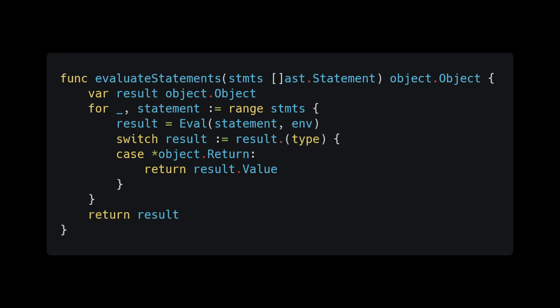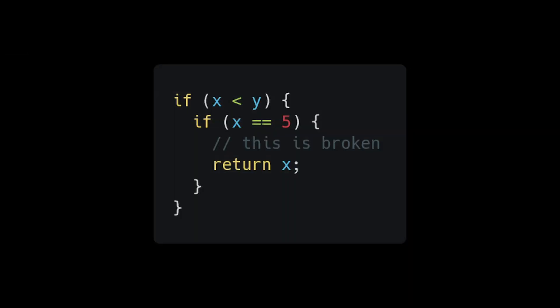Inside evaluate_statements, do a quick check to see what type of statement we have. If it's a return statement, return the value inside that statement — note that we are returning the wrapped object, not the return object itself. This works for non-nested structures, but the second we have nested blocks it gets gummed up. We can't unwrap at the deepest level; we need to pass it all the way up to the top.